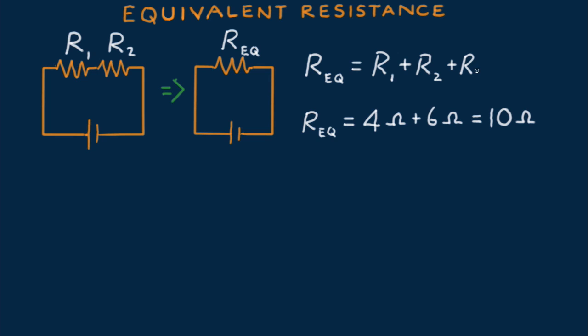If there were additional resistors in series, then the equivalent resistance would extend for n number of resistors in series.